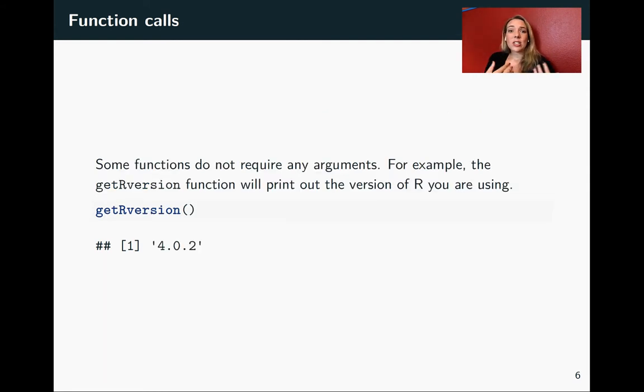There are a few functions that don't have any arguments. One example is the getRversion function. All this does is tell you which version of R your current R session is running. For that one, you don't have to put anything in those parentheses. You still do have to have the parentheses, but you don't have to put anything within them.